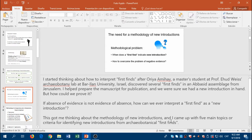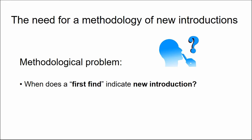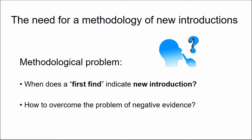A colleague found several first finds for the archeobotany of the Levant in an assemblage from Jerusalem, and we were sure that at least one of them was a new introduction for the Islamic period. But how could we prove it? If absence of evidence is not evidence of absence, how can we ever be sure that we have a new introduction in hand?